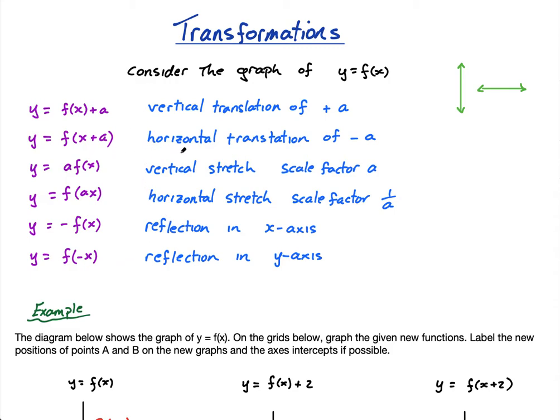Also be careful, the vertical ones act as you would expect. So when you add a, it just moves it up a. When you subtract a, it moves it down a. But the horizontal, if you add a inside the bracket, it will actually move it left a. And if you subtract a, it will move it right a. And similarly here, when you stretch it vertically by a, it will stretch with scale factor a. And if you stretch it horizontally, it will stretch it with scale factor one over a.